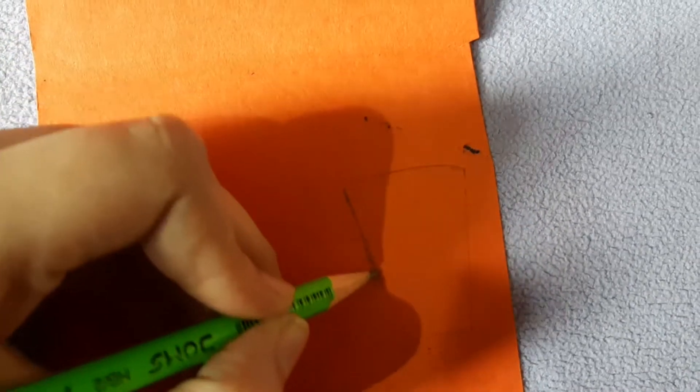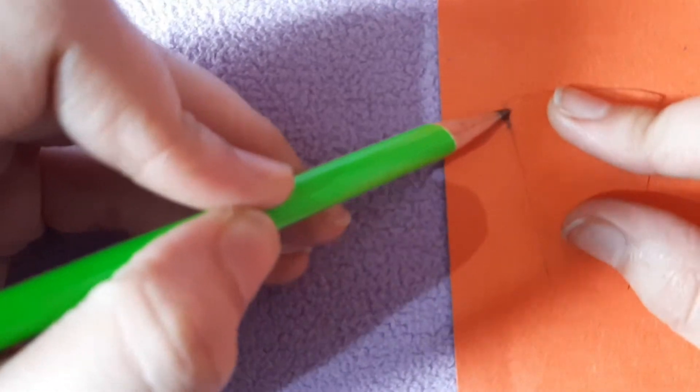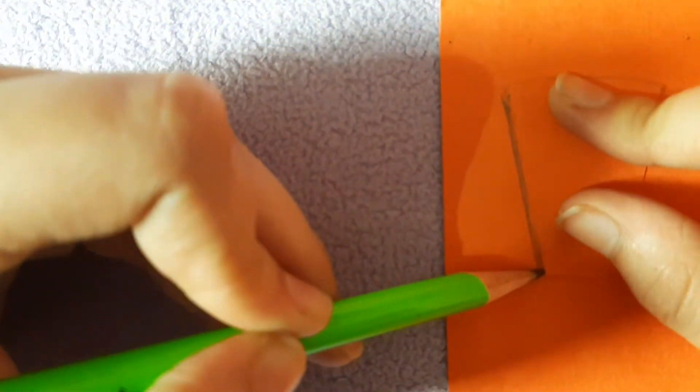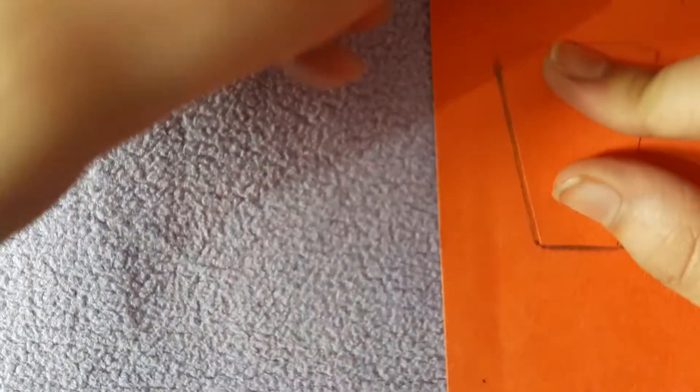Now draw this shape which has been shown to you and cut with the help of scissors. Here you will need more shapes like this, so I'm going to trace this so that it will be easy to cut more shapes like this.